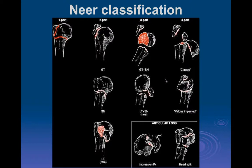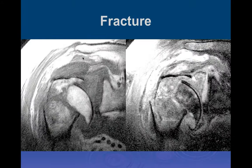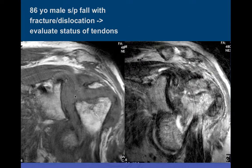The Neer classification goes one-, two-, three-, four-part with progressively more displacement and rotation, and includes components for avulsions and Hill-Sachs-type injuries. With MRI, many of these blend into one another, and most people are now moving toward simply describing the different components — such as a comminuted fracture with displacement and rotation of the distal fragments — rather than using the Neer classification.